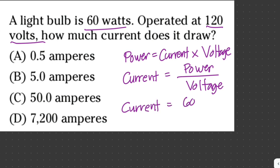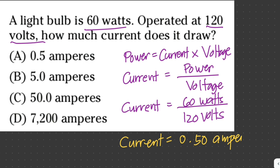Power is 60 watts over 120 volts. Therefore, the value of our current here is equal to one-half or 0.5 amperes. So the answer here is letter A.